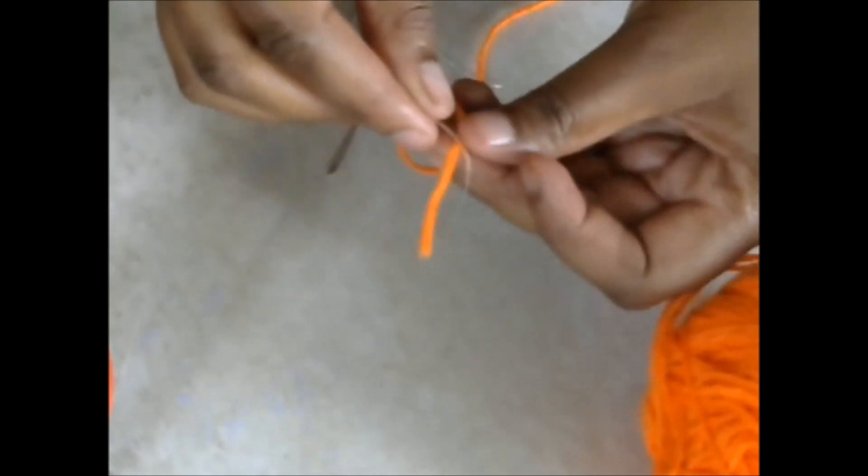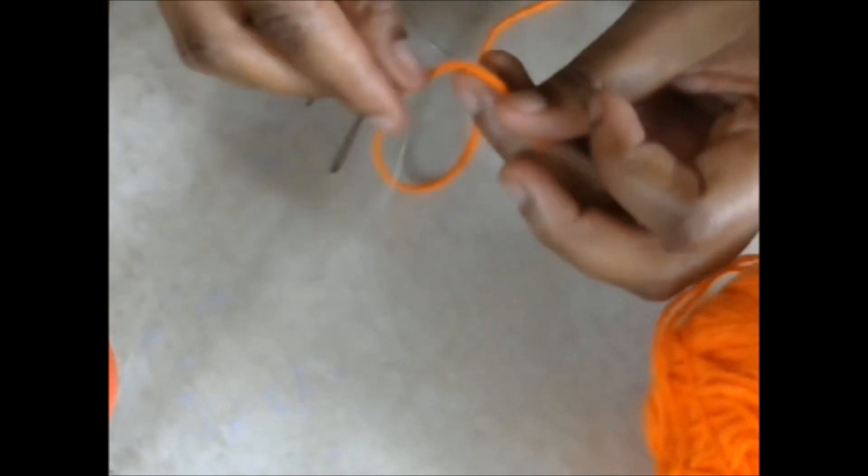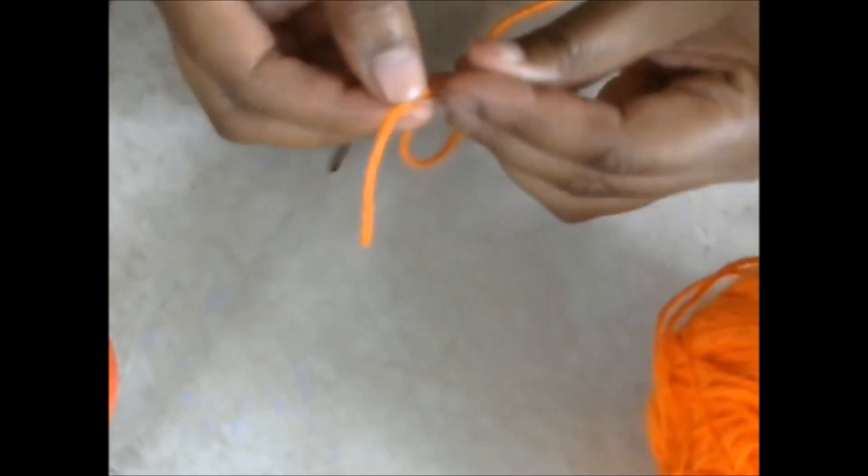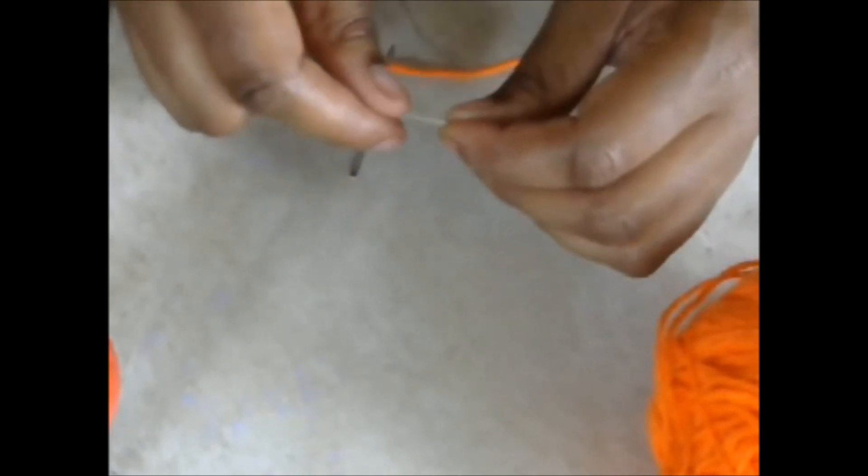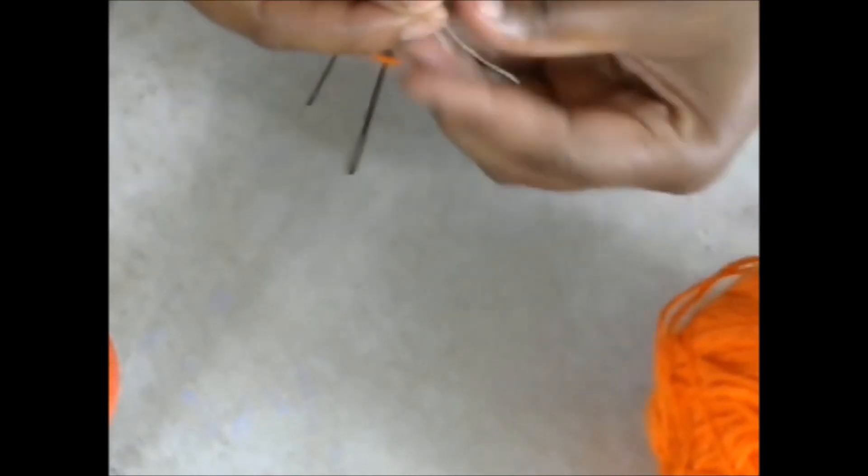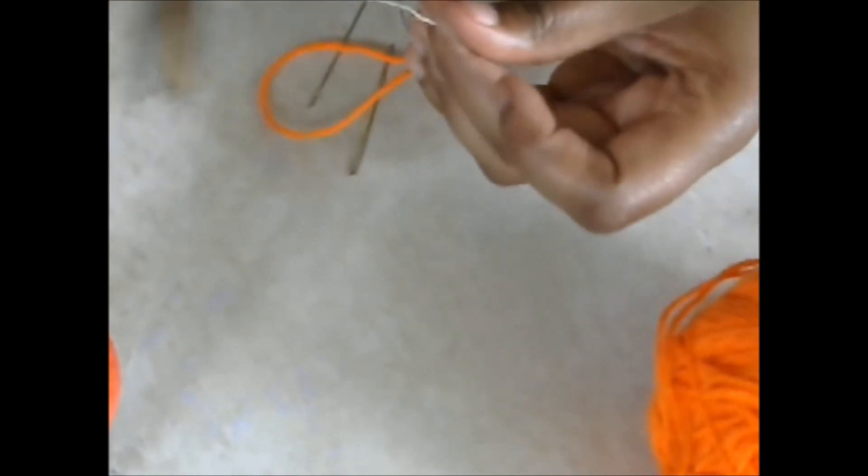All you're going to do is take this yarn, go about an inch or two against the yarn, and you're going to pull it pretty tight, just like that. Then you're going to kind of even it out, so you can take your scissors and just make sure that it's even.